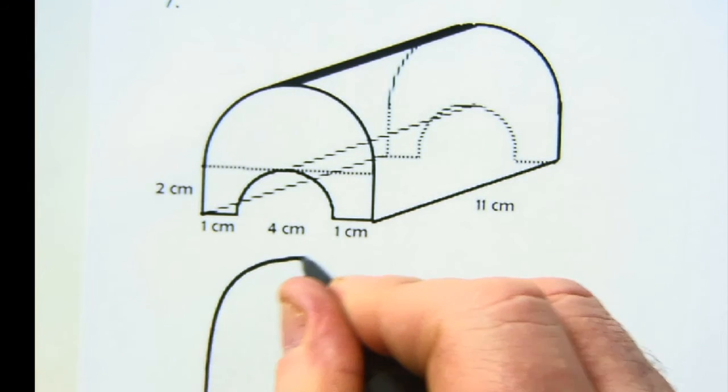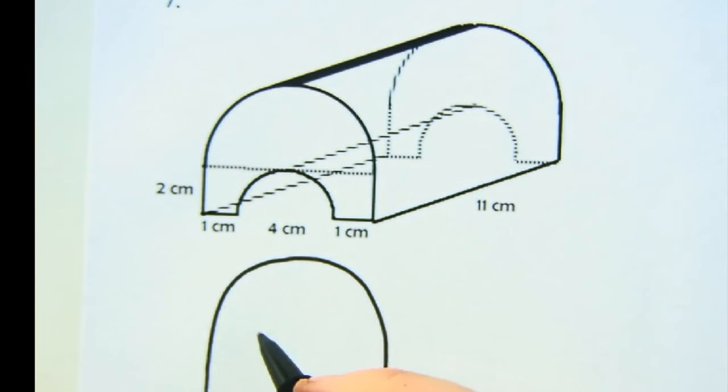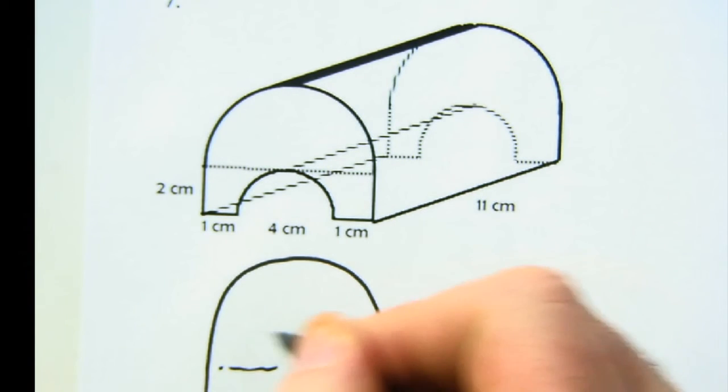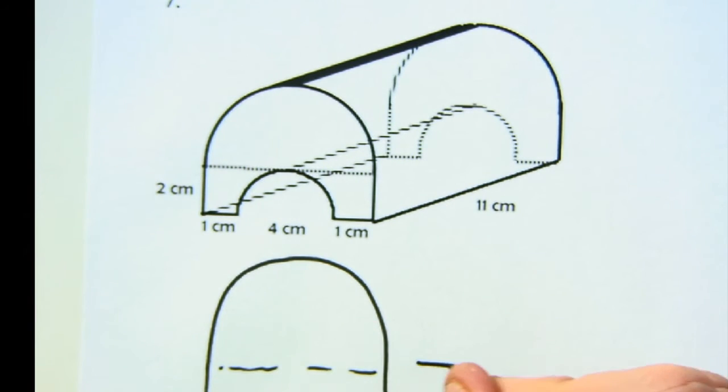I would find this, which is going to be a rectangle and like a half of a circle. I would subtract out this little thing here. That will give you basically this thing.